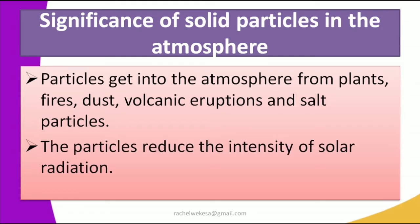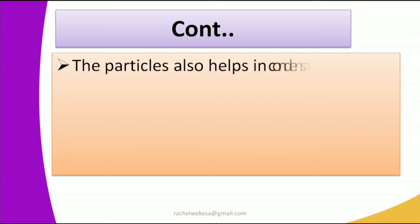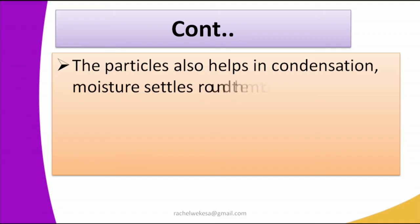The solid particles in the atmosphere help to reduce the intensity of solar radiation. The dust particles absorb some of the light coming into the Earth's surface, reducing the effects of solar radiation. These particles are also very important because they help in condensation — moisture settles around them, and after condensation, it leads to rainfall, which helps us in agriculture.